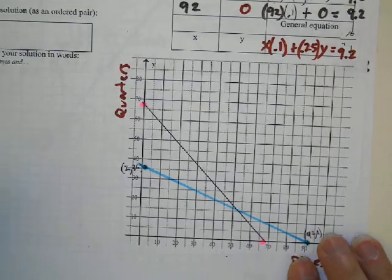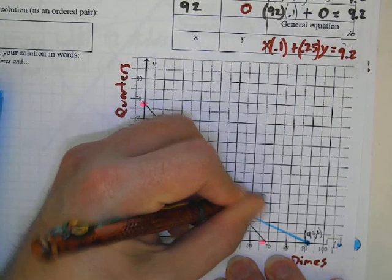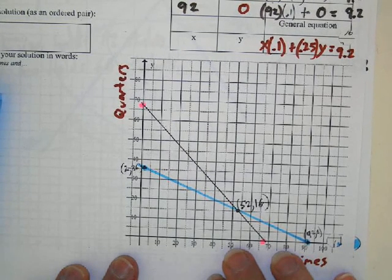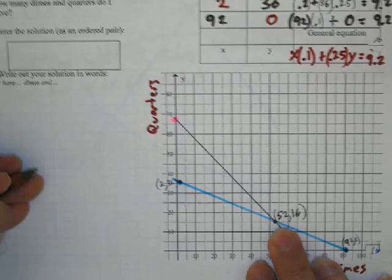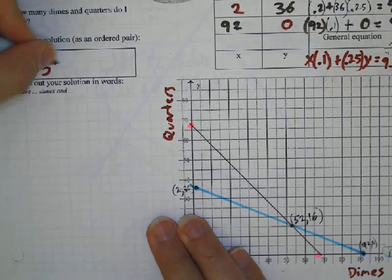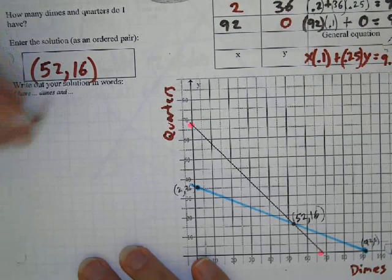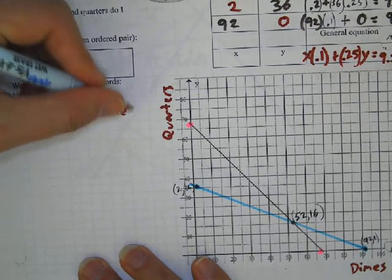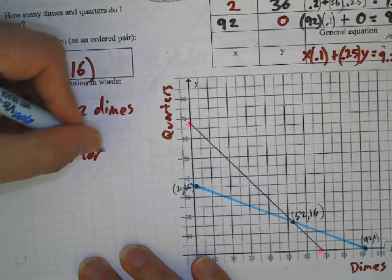And I draw those lines and connect it. And when you did this on Desmos, you found out the intersection was 52 comma 16. So what does this mean? This means when I have 68 coins total and when I've got $9.20, then that means I'm going to have 52 dimes and 16 quarters.